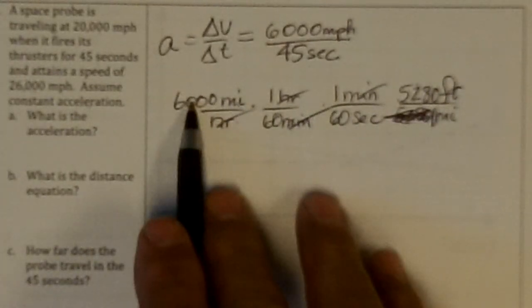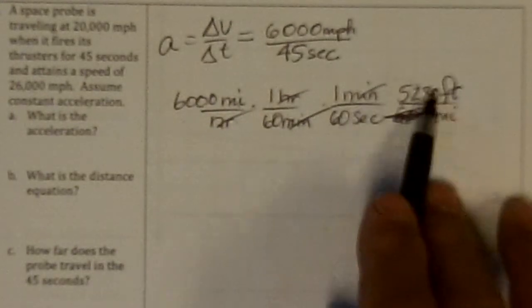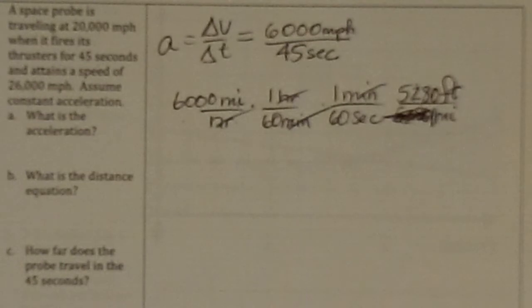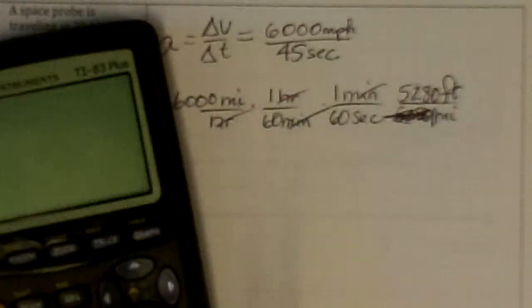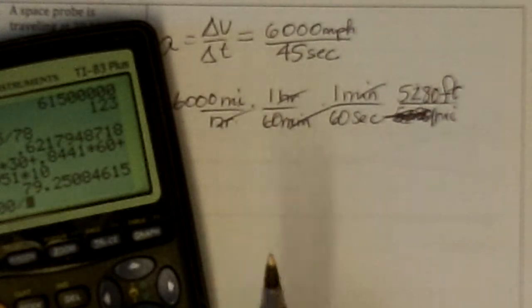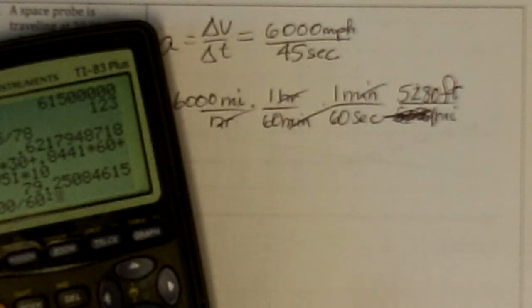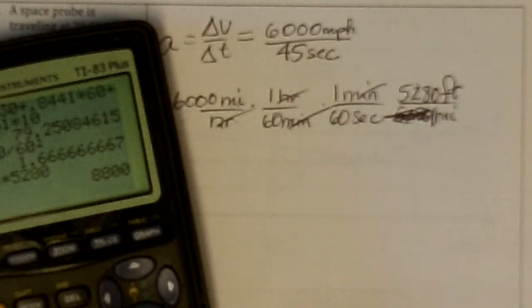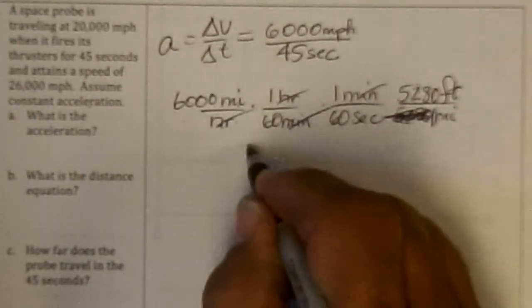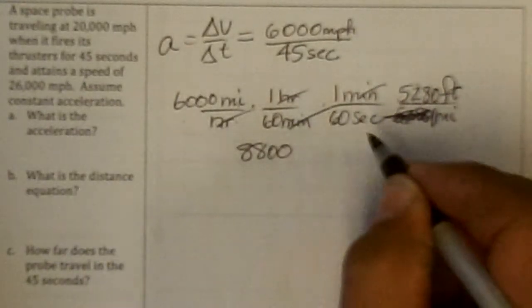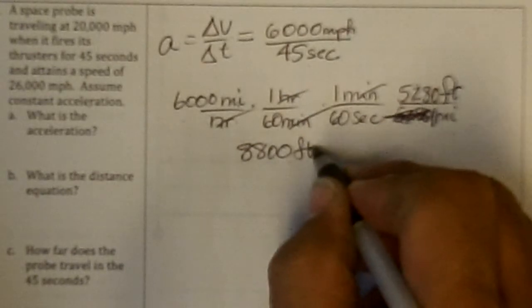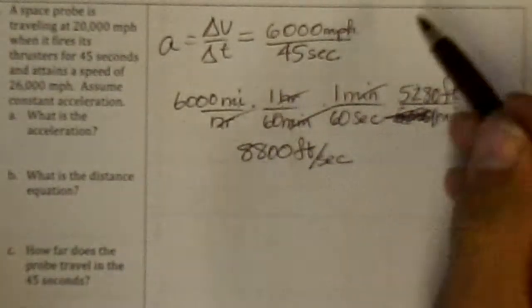So I get 6,000 divided by 60, divided by 60 times 5,280. And that will be, if I can find my calculator, 6,000 divided by 60 squared times 5,280 is 8,800 feet per second.